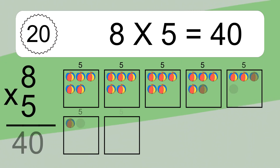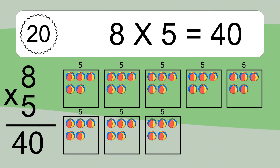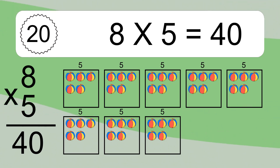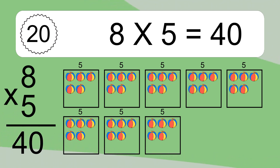8 times 5 equals what? 8 times 5 equals 40. We have 8 boxes, and each box has 5 colorful balls inside. If you count all the balls in all the boxes together, you will have 8 times 5 balls. This equals 40 balls. I'll see you next time.